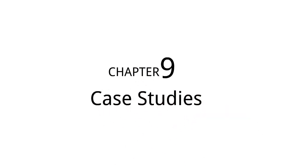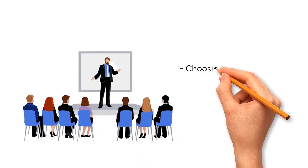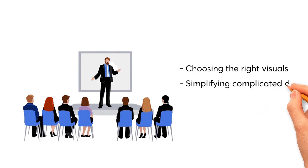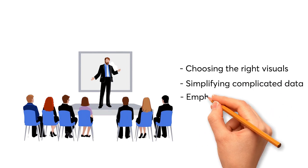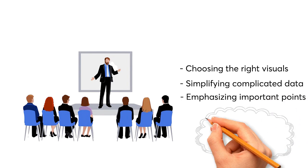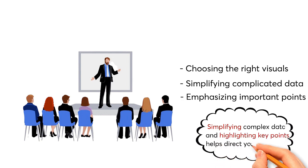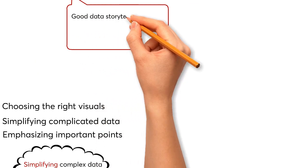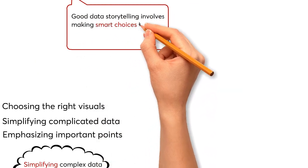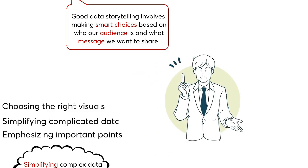Chapter 9 is titled Case Studies. Knowing your audience is essential for creating an engaging data story. Choosing the right visuals, simplifying complicated data, and emphasizing important points are key to making your message strong. We learn from this chapter that good data storytelling involves making smart choices based on who our audience is and what message we want to share, by looking at real-world examples.